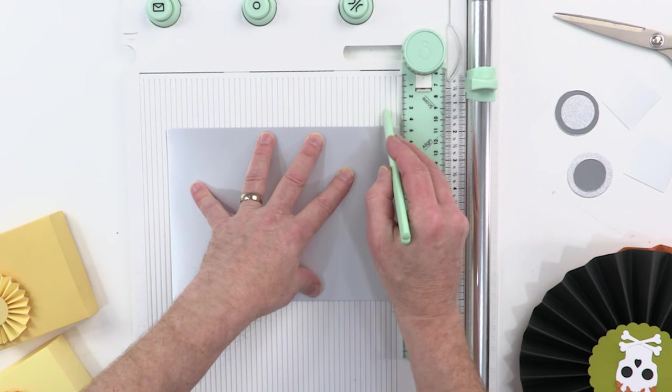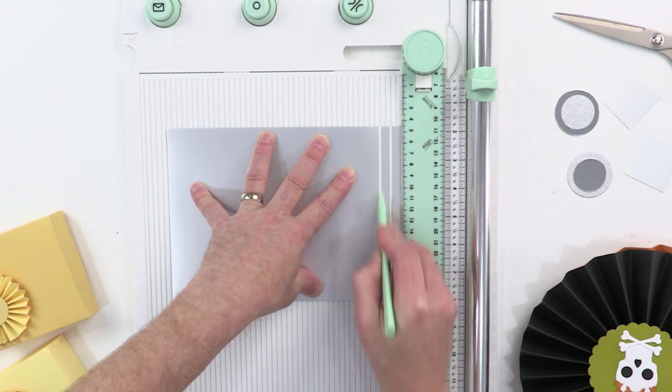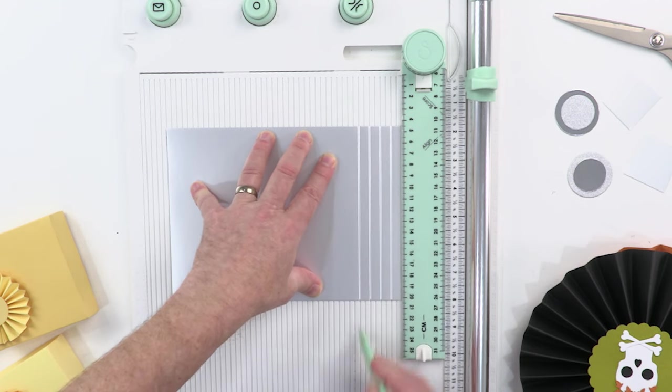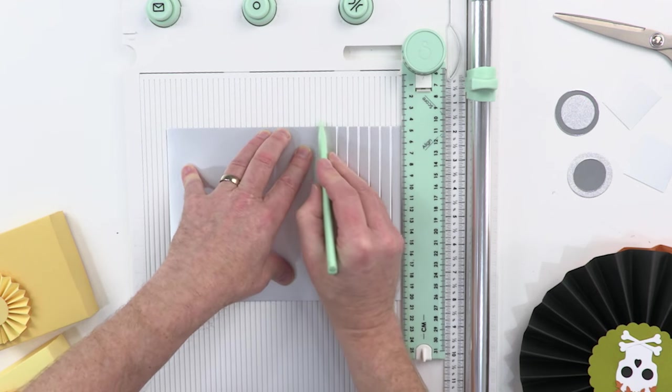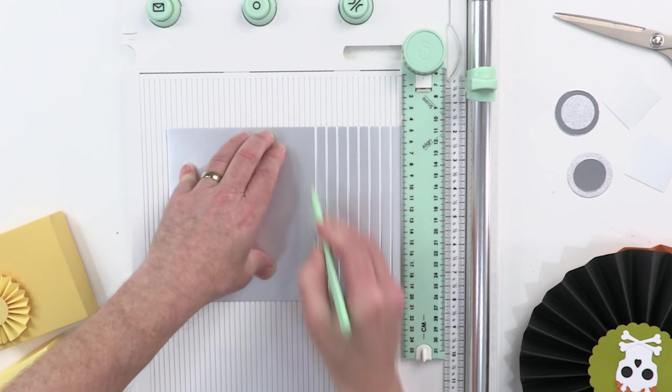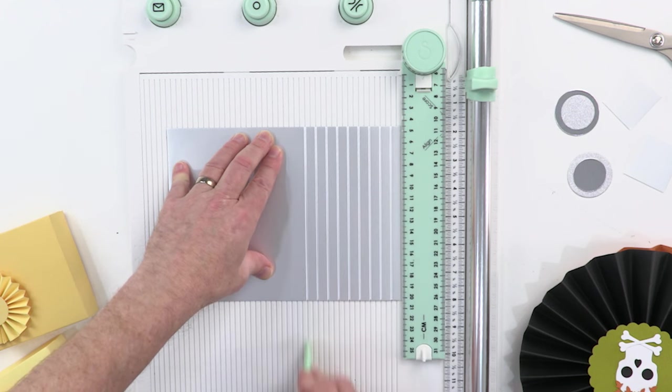And we'll just keep going along at one centimeter increments. Now if you want thinner, finer rosettes, you simply go down to half centimeter increments, or if you want to make the bigger ones, go up to two centimeters. I mean, the choice is yours.